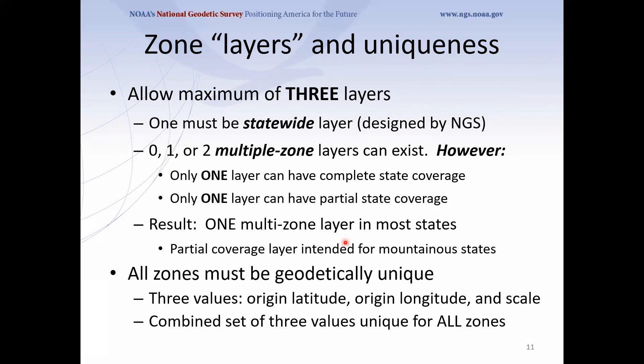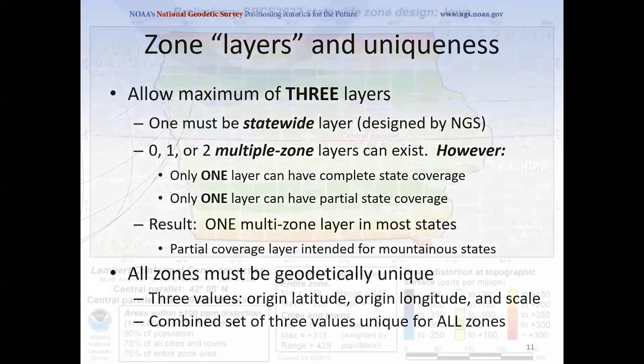Every state will have a statewide zone. In the case of Idaho, they'd also get the three existing zones by default. Idaho could request something different. There's a wrinkle here based on stakeholder feedback: states can have multiple zone layers. For example, Idaho could have the statewide zone, the three transverse mercator zones, and also low distortion projection zones for certain urban areas — as long as those LDP zones didn't cover the entire state. So you can have an LDP layer in addition to a multiple zone layer that covers the entire state.